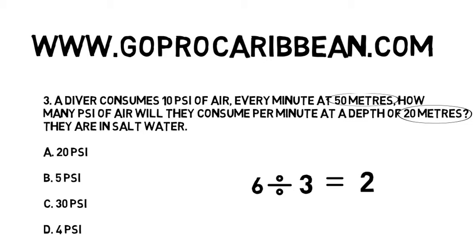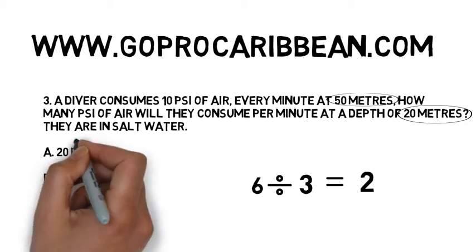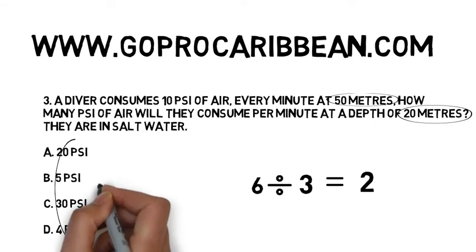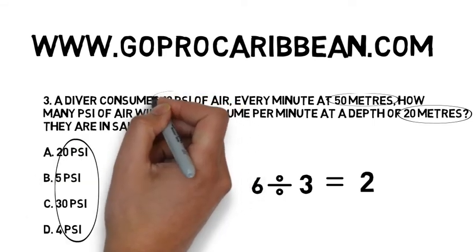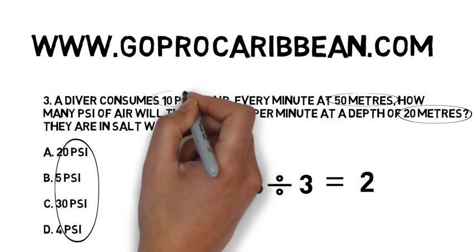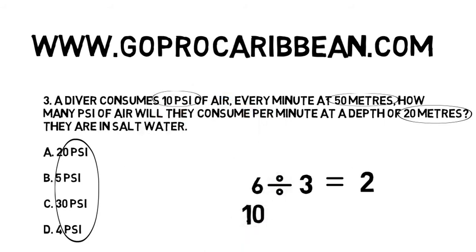Now we need to look at the question and ask ourselves: what is the starting PSI? The starting PSI is 10 PSI. And we also need to think about what number we're expecting as a possible answer. I'm going from 50 meters up to 20 meters — I'm getting shallower. That means I'm going to breathe through my air more slowly; I'm going to breathe through a smaller volume of air every minute than I would have at 50 meters. So I need to make the number 10 smaller.